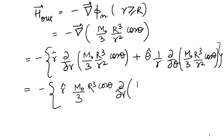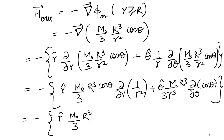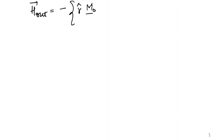Differentiating the r-component gives the derivative of (1/r²)cosθ with respect to r, and for the θ-component we differentiate cosθ with respect to θ. Carrying out the differentiation, the r-component gives M₀/3 · R³ · (−2/r³) cosθ, and the θ-component gives M₀/3 · R³/r³ · (−sinθ). So H_outside = −r̂ · (M₀R³/3r³) · (−2cosθ) − θ̂ · (M₀R³/3r³) · sinθ.